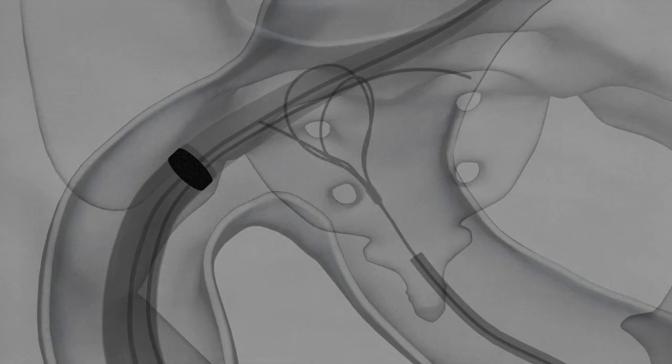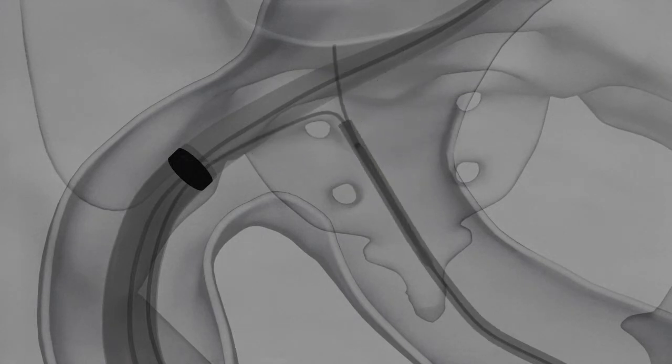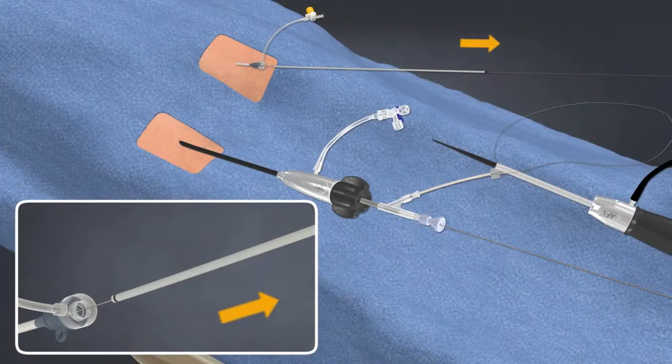From the contralateral side, using standard snaring technique, snare the floppy tip of the contralateral limb wire and bring the wire out through the 9-French sheath.